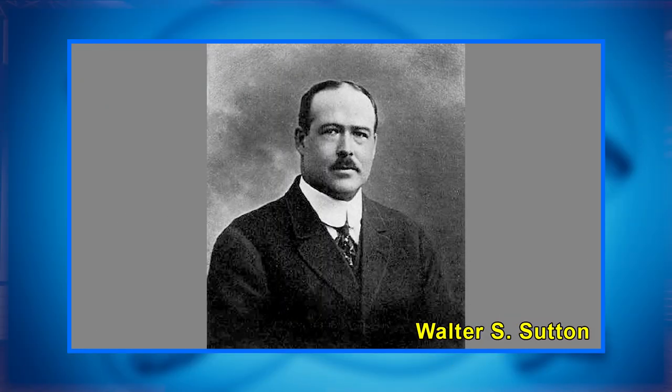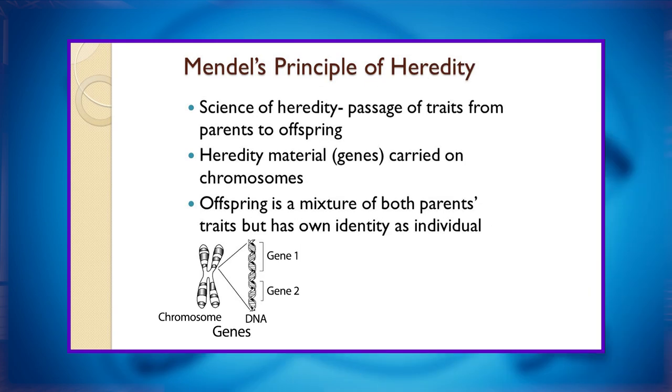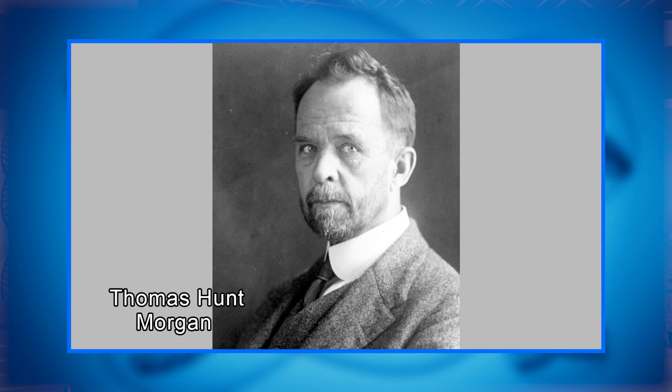Sutton documented the fact that each homologous pair of chromosomes consists of one maternal chromosome and one paternal chromosome. Showing that these pairs segregate independently into gametes in meiosis, he concluded that this process is the biological basis for Mendel's principles of heredity. Despite compelling correlations between the behavior of chromosomes during meiosis and Mendel's abstract laws, the chromosomal theory of inheritance was proposed long before there was any direct evidence that traits were carried on chromosomes.